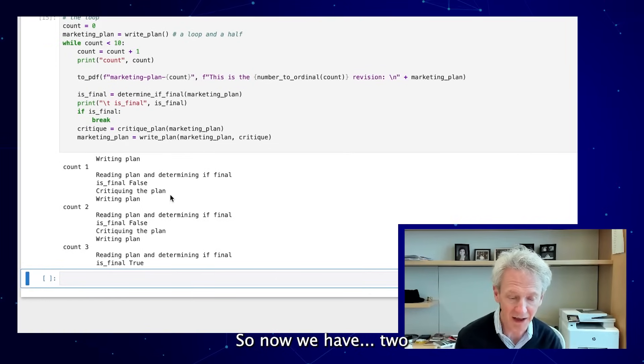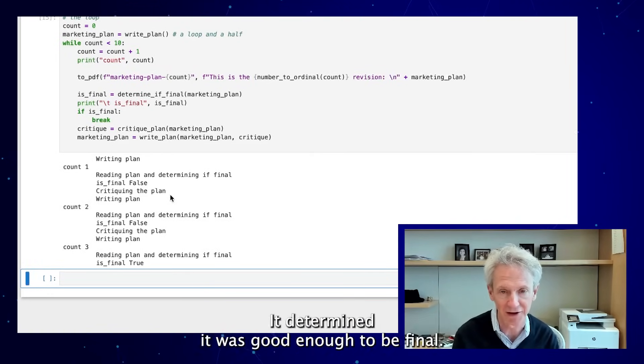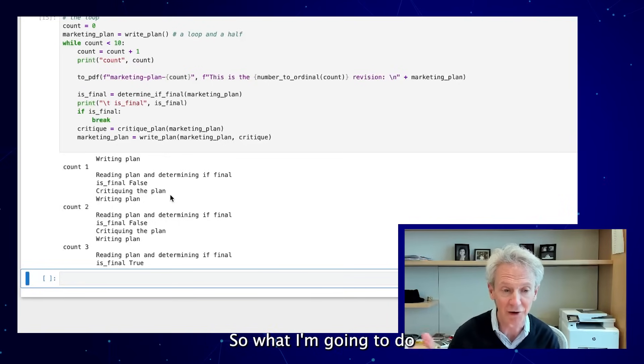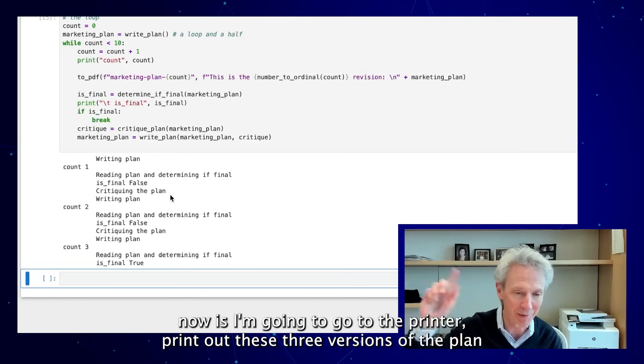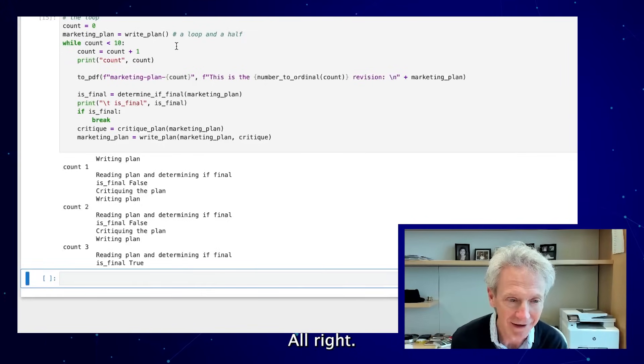Now we have three revisions of the plan and we have a third version and determined it was good enough to be final. What I'm going to do now is I'm going to go to the printer, print out these three versions of the plan and give you what I think occurred.